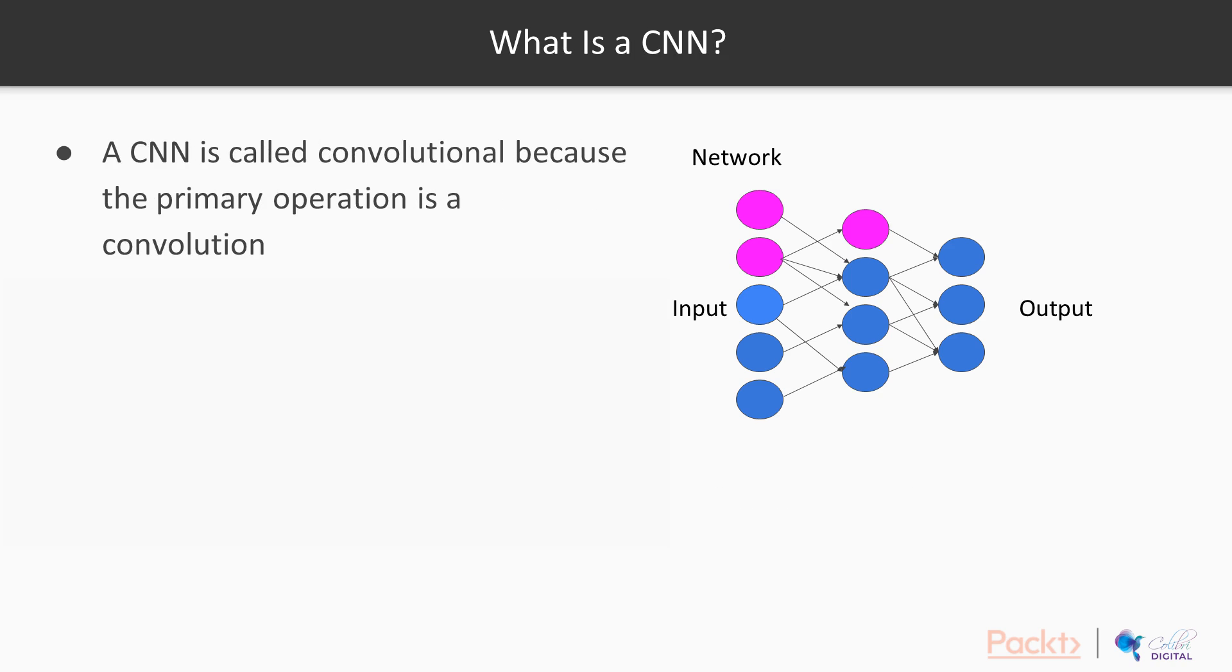So what actually is a CNN? A CNN is a convolutional neural network, as you can tell, because the primary operation is a convolution. What convolution is is it's effectively matrix multiplication on a subset of the input. Why we do this is because if you're doing dimensions the size of images, you do not want to be doing matrix multiplication on the whole image.